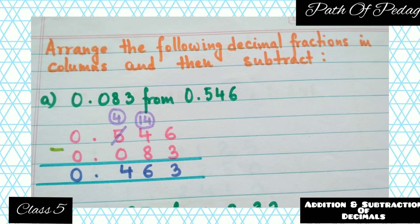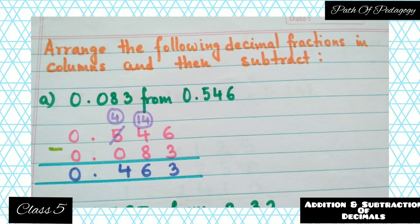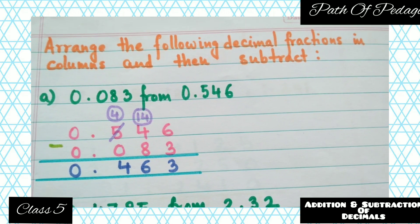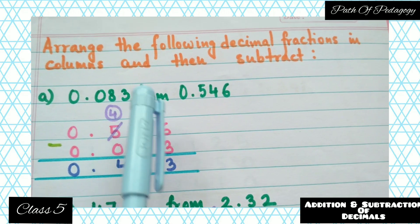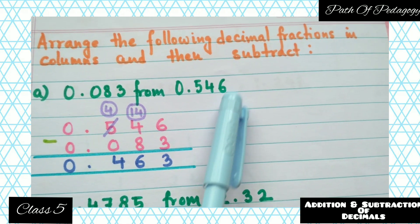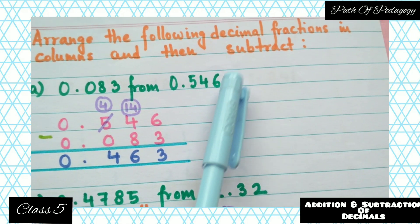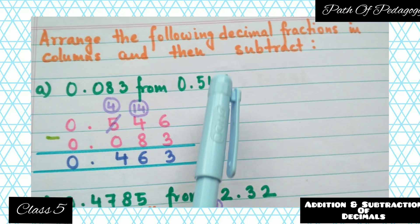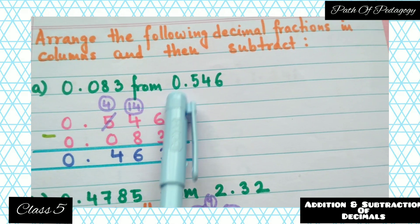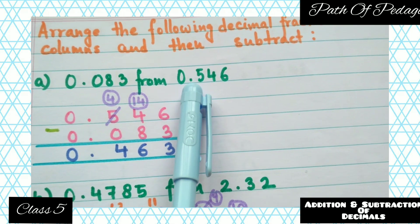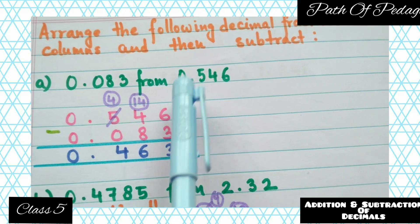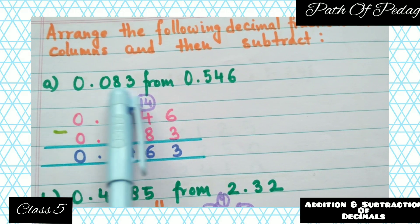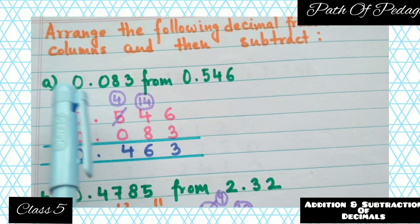The next set is: arrange the following decimal fractions in columns and then subtract. We are going to learn subtraction of decimals now. First question: subtract 0.083 from 0.546. In the case of subtraction, you have to write down the decimal that comes after the word 'from' first. Here that is 0.546, so 0.546 comes first.